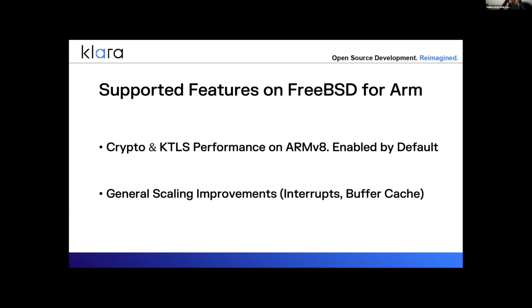Clara has done some work to enable FreeBSD on ARM, including Crypto and KTLS performance on ARMv8. When we first got access to the ARMv8 reference platform and hooked it up with a pair of Mellanox dual 100-gig cards, we were only getting about 33 gigabits per second across those four cards because it wasn't taking advantage of the crypto offload on the CPU. When we implemented AES-GCM in the ARMv8 crypto framework and got that hooked up through OCF, fixed some bugs specific to ARM in the KTLS code, we were pushing over 210 gigabits per second from that same platform with just a couple of commits to FreeBSD.